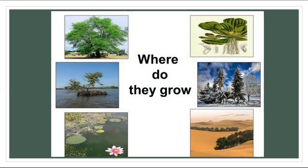Plants can grow in a stream — this is the stream where plants can grow. Plants can also grow in a pond, in a desert, in cold places, and beside rivers. So there are different habitats where plants can grow.